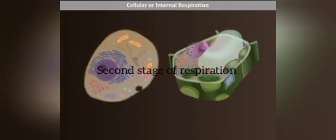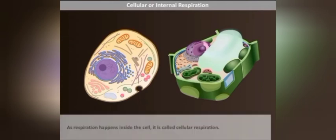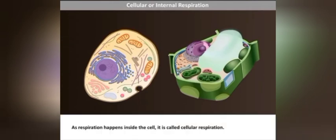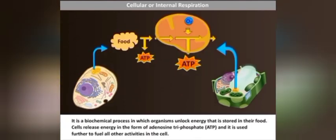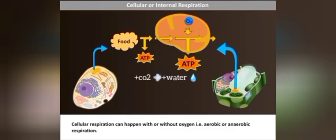Internal respiration is the second stage, also called cellular respiration because it happens inside a cell. In cellular respiration, the mitochondria play a major role. Inside the mitochondria, food or glucose is converted to energy. Along with energy, carbon dioxide and water are released as byproducts. This process happens in the presence of oxygen. Glucose is converted to energy, carbon dioxide, and water in the presence of oxygen. If it takes place in the absence of oxygen, it is a different type of respiration.